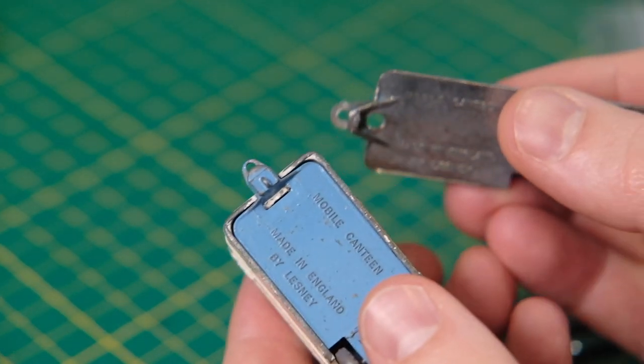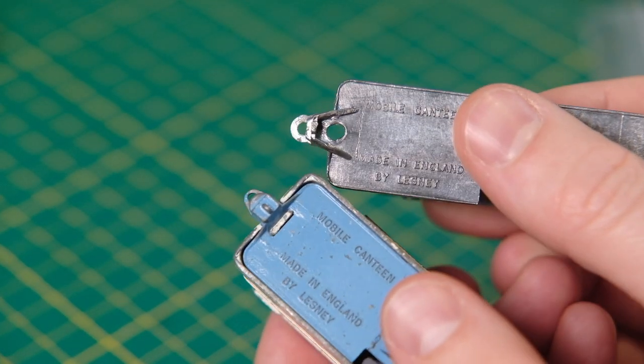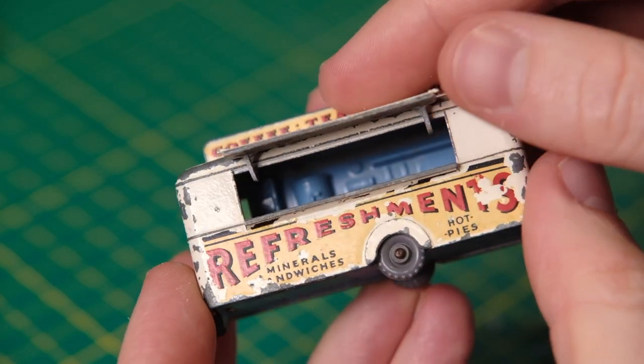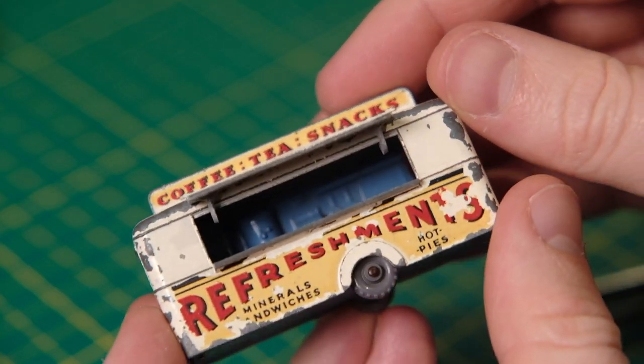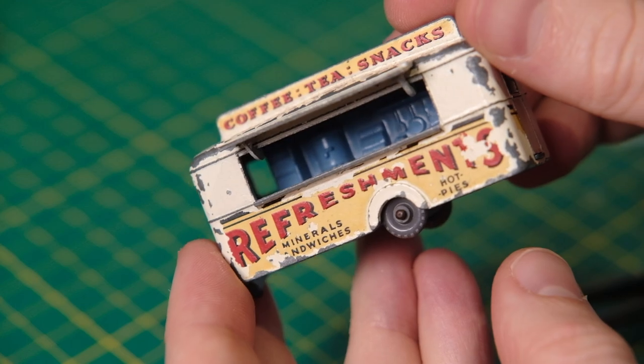I missed recording this process but it was identical to that in my 23C Bluebird Dauphin Caravan restoration video. Here's a brief peek inside the canteen.